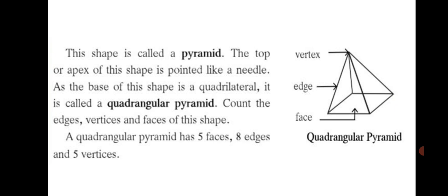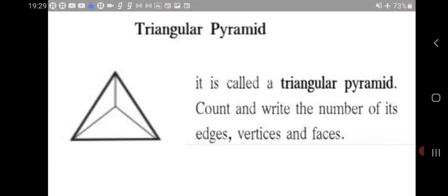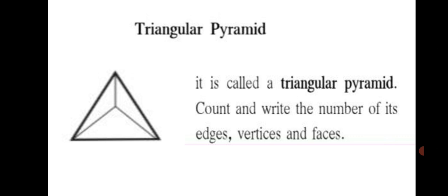Similarly, can we check a triangular pyramid? When the base is a triangle, we get a triangular pyramid. Let's start with edges first: 3 edges for the triangle below and 3 formed by the triangles on the sides, total 6 edges. Vertices: 3 corners of the triangle give 3 vertices and 1 on top, 3 plus 1, 4 vertices. And faces: 1 face at the bottom and 3 faces at the sides, so total 3 plus 1, 4 faces. A triangular pyramid has 6 edges, 4 vertices and 4 faces.